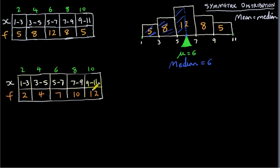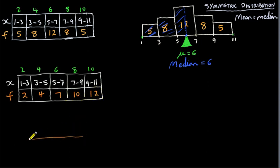Now let's look at this frequency distribution table. It has the same scales — the x values go from 1 to 11 and the intervals are the same. But now the frequencies are increasing as x increases. This is a skewed distribution. The histogram will be skewed to the left, with a tail at the left.